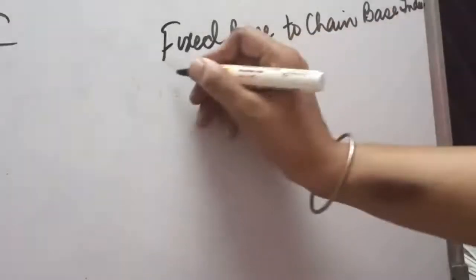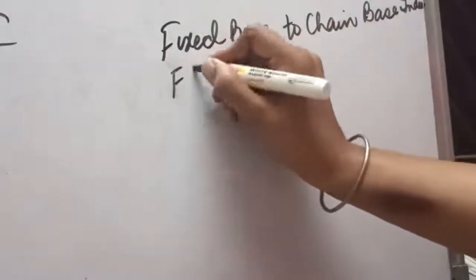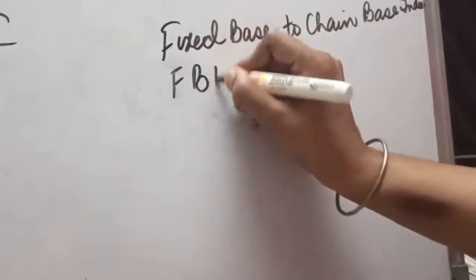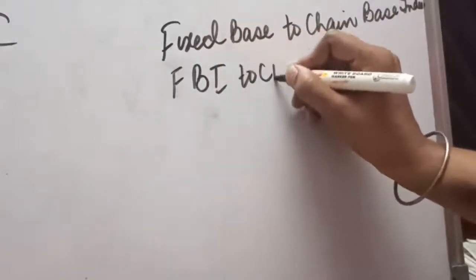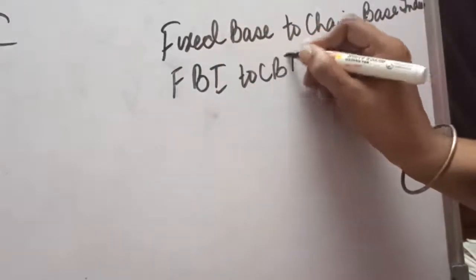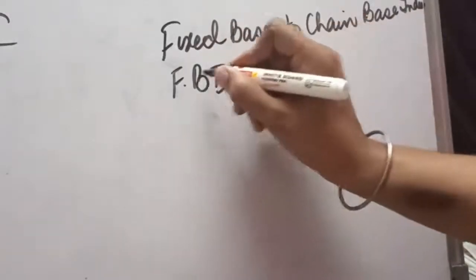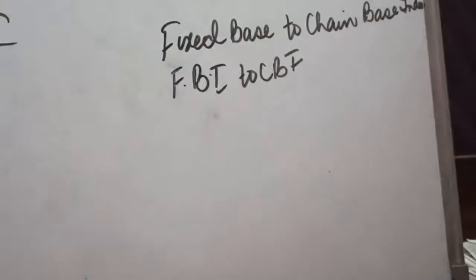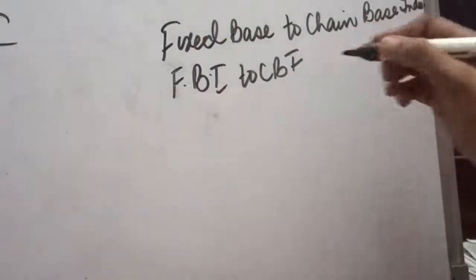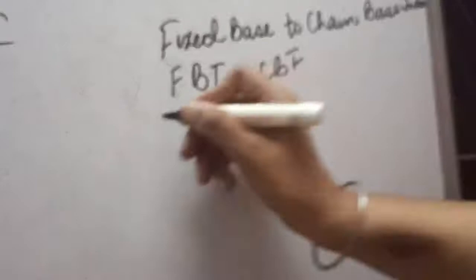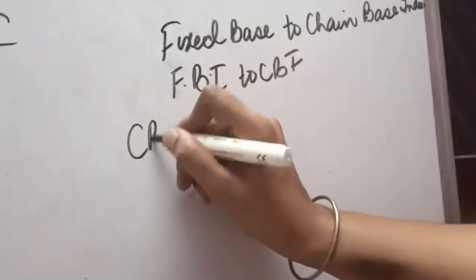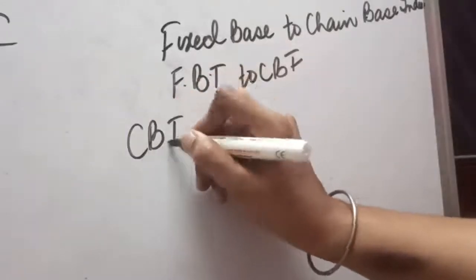Another category of questions can be where you have been told that you have to convert FBI to CBI. You have been given in the question the data of fixed base index and you will be told that you have to convert it into CBI. So, here in the answer we will be getting CBI.